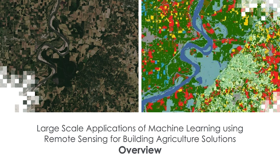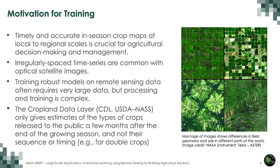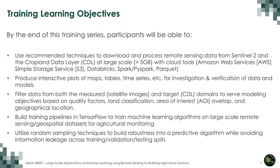The following slides provide an overview of the three-part webinar series on large-scale applications of machine learning using remote sensing for building agriculture solutions. Timely and accurate in-season crop maps at local to regional scales is crucial for agricultural decision-making and management. Irregularly spaced time series are common with optical satellite images. Training robust models on remote sensing data often requires very large data, but processing and training is complex. The cropland data layer provided by the USDA's National Agricultural Statistics Service only gives estimates of the types of crops released to the public a few months after the end of the growing season.